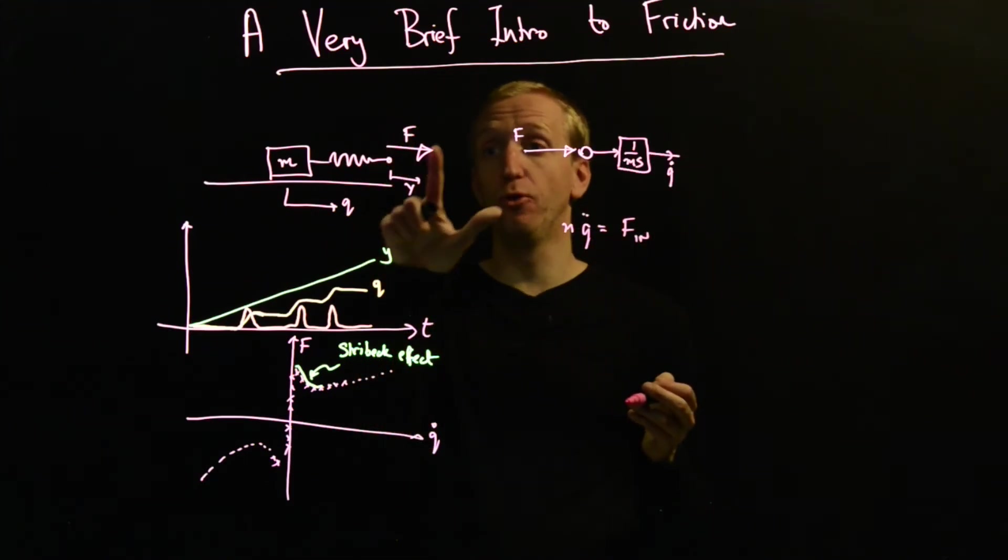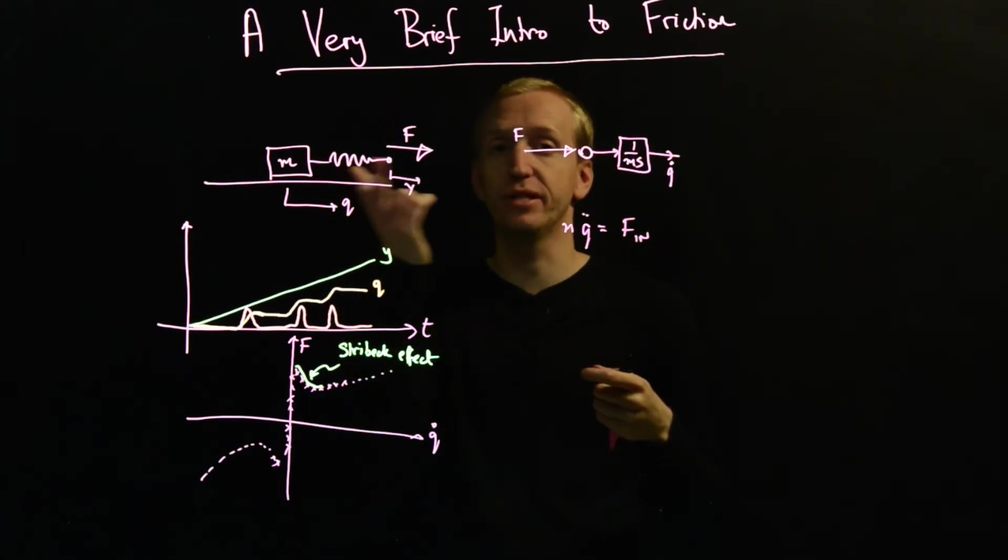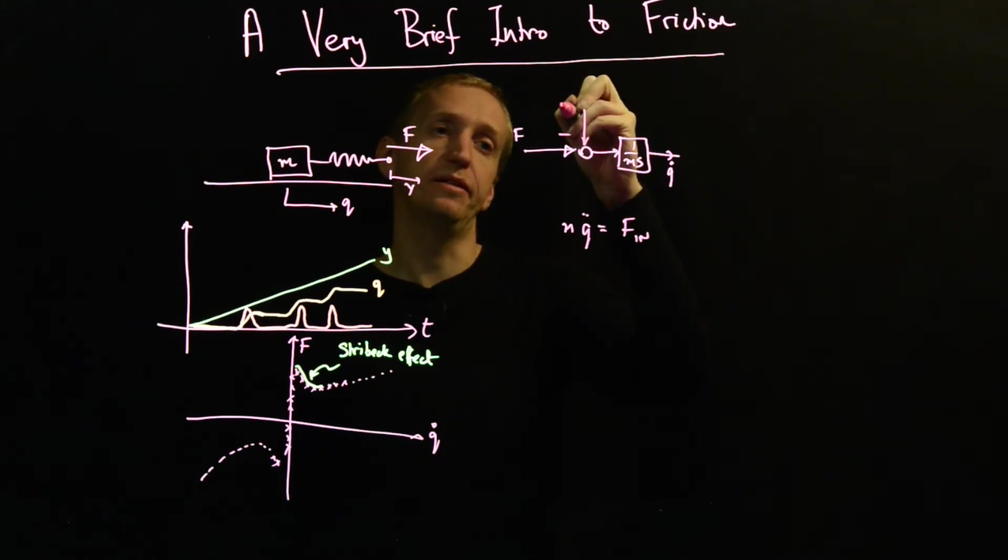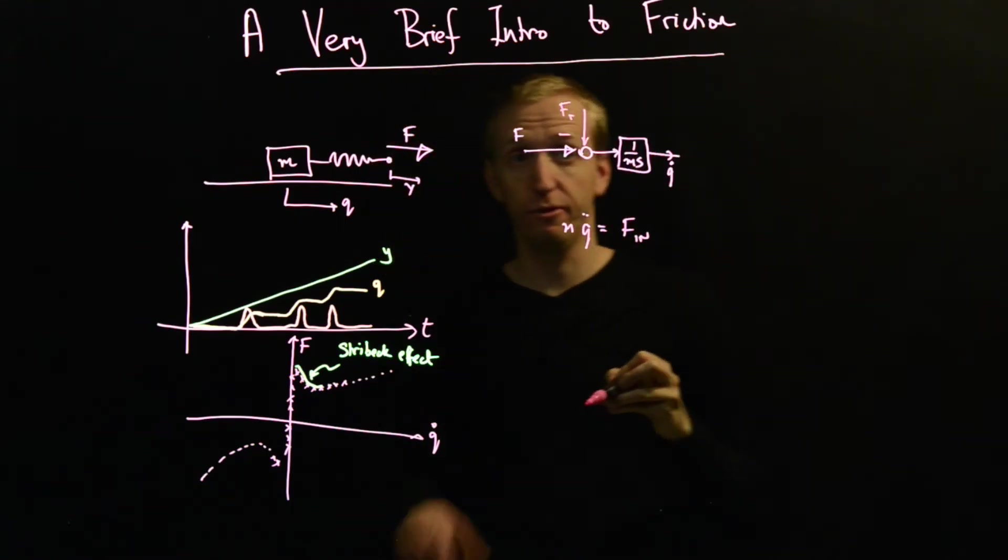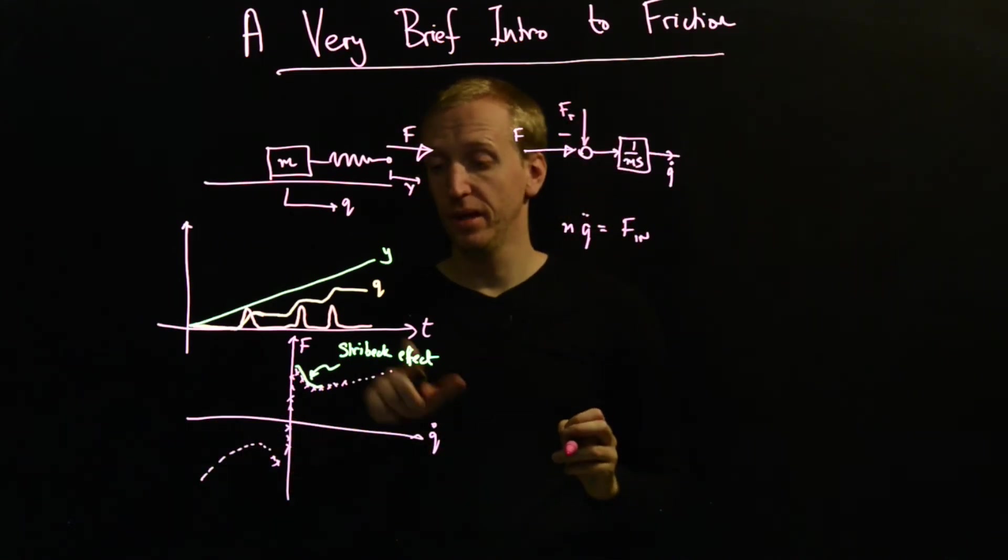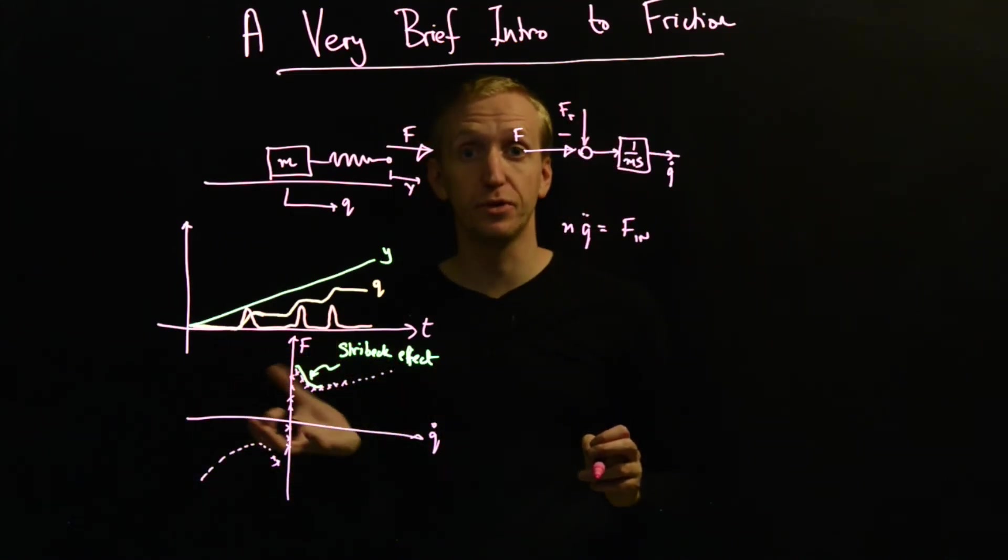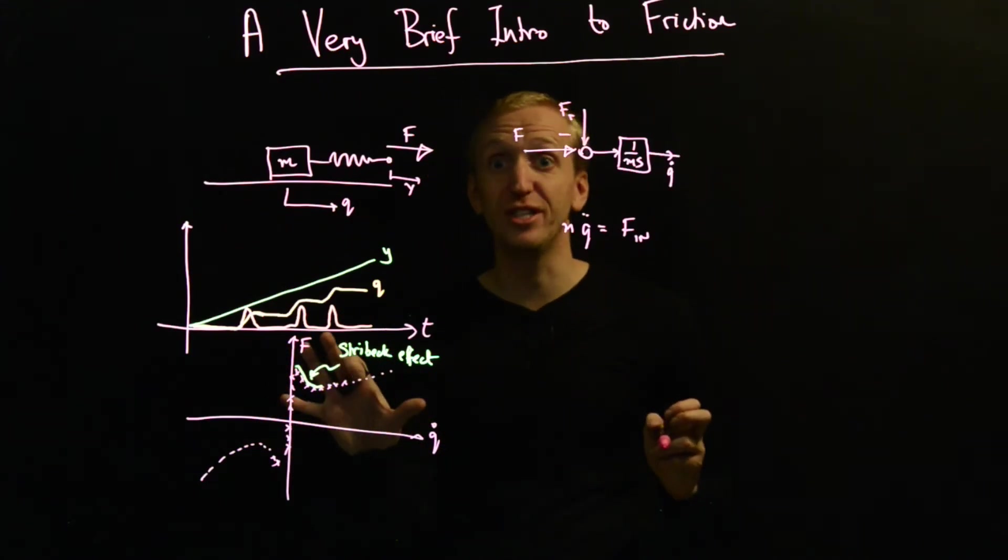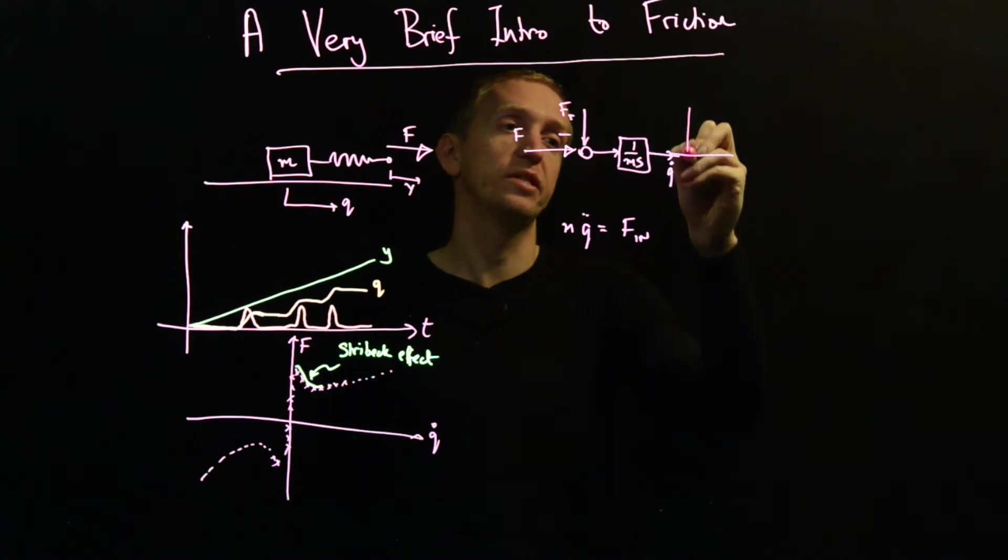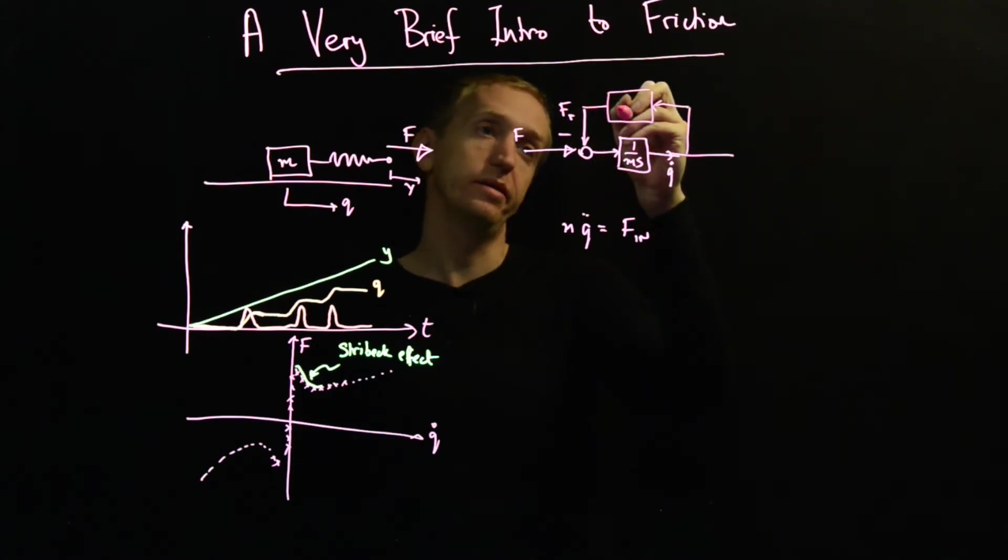So what are the input forces? We have the force that we're applying to the end of the spring, which is the same as the tension coming through the spring. But we also have the negative force coming from our friction, opposing the motion. And as we discussed, it's typical to model this as a velocity dependent force.